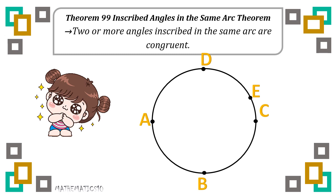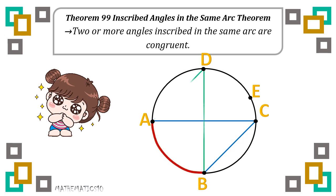Moving on for theorem 99, inscribed angles in the same arc theorem: two or more angles inscribed in the same arc are considered congruent. For example, angle ACB is an inscribed angle because the vertex is on any point of the circle, with intercepted arc AB. Another inscribed angle is angle ADB, whose intercepted arc is also arc AB. And angle AEB or BEA is also an inscribed angle with intercepted arc AB as well.